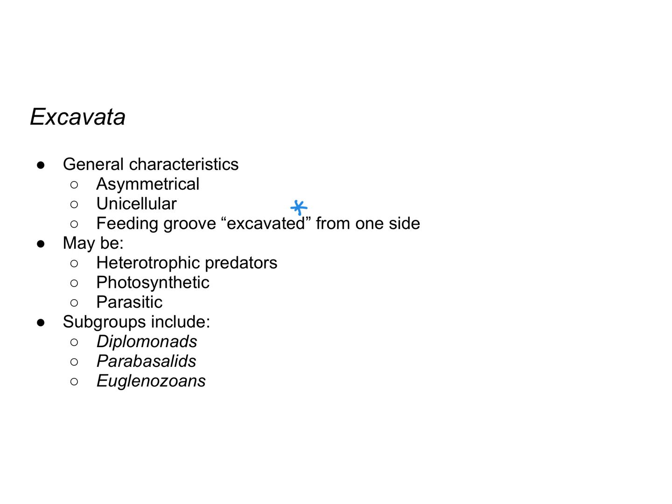Some Excavata are heterotrophic predators, others are photosynthetic, and they might be parasitic. The subgroups we're going to focus on are the diplomonads, parabasalids, and euglenozoans.